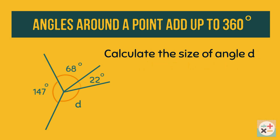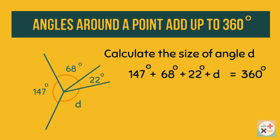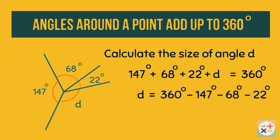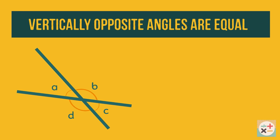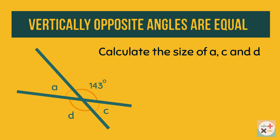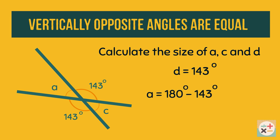Here is an example of a question which we can solve using this fact. When we have two straight lines which cross, the angles vertically opposite each other at the vertex are equal. Here, angles A and C are equal, and angles B and D are equal. In this example, D is vertically opposite to the 143-degree angle, therefore D is also 143 degrees. We can also calculate angle A, knowing that angles on a straight line add up to 180 degrees. Finally, as angle C is vertically opposite the 37-degree angle, it is also equal to 37 degrees.